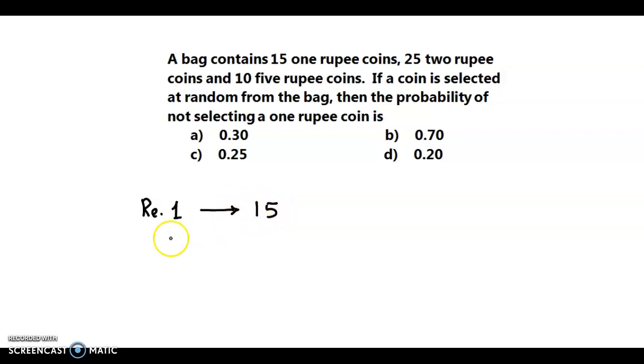Then 25 two rupee coins. So two rupee coins, the quantity is 25.